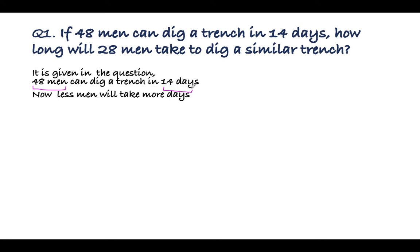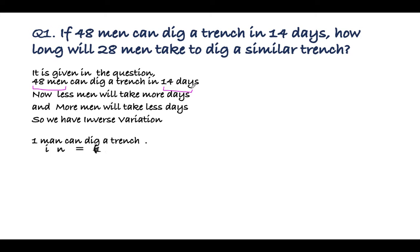Less men will take more days and more men will take less days, so inverse variation is there. One man can dig a trench in 14 × 48 days. If only one man is digging the trench, he will take—he will have to do the work of 48 men by himself.